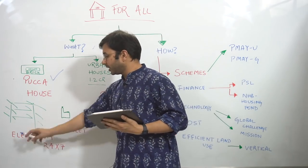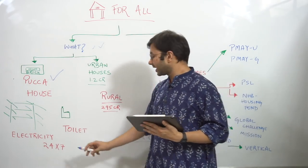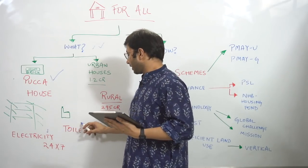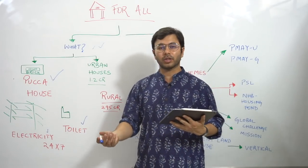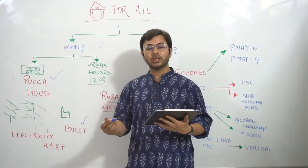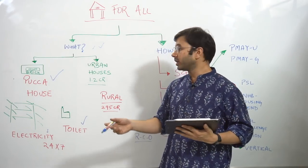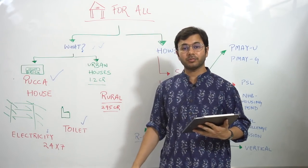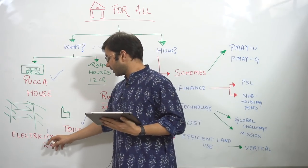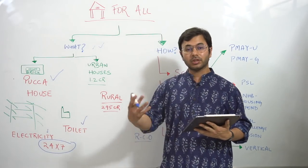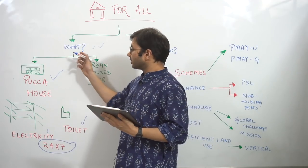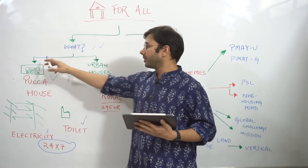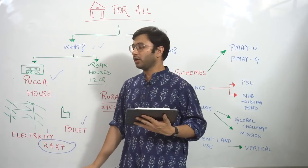The second parameter when you say that we have housing for all is electricity and toilet. The third one is toilet, which includes water as well. So electricity, toilet, water becomes the second and third point and pakka house is the first point. And you have to provide electricity, water and toilet on a 24/7 basis. So this is when you can say that now we have provided houses for all.